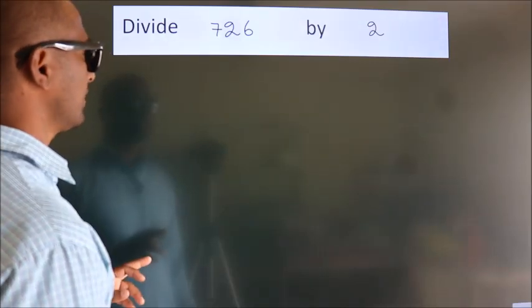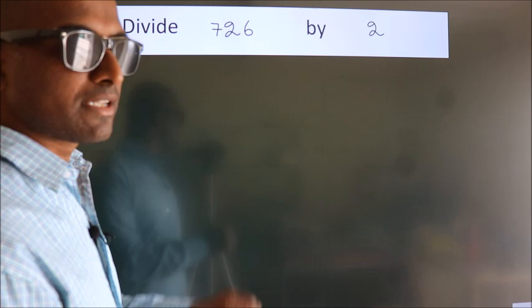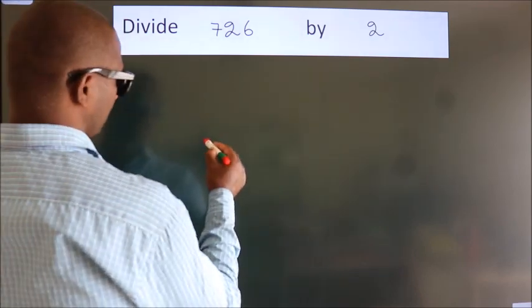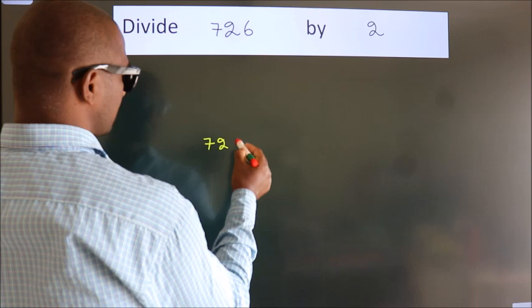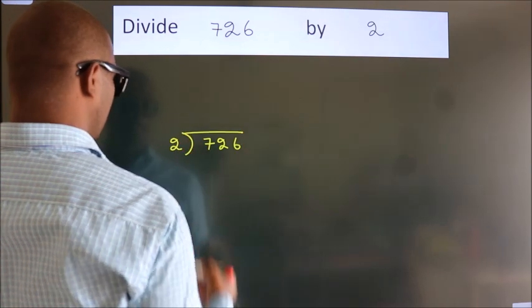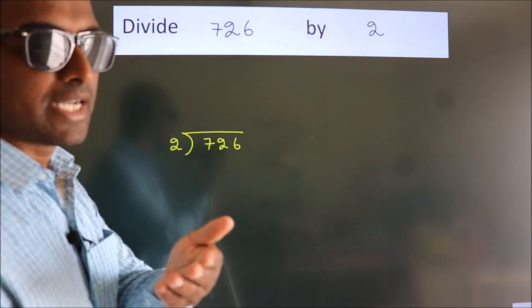Divide 726 by 2. To do this division, we should frame it in this way. 726 here, 2 here. This is your step 1.